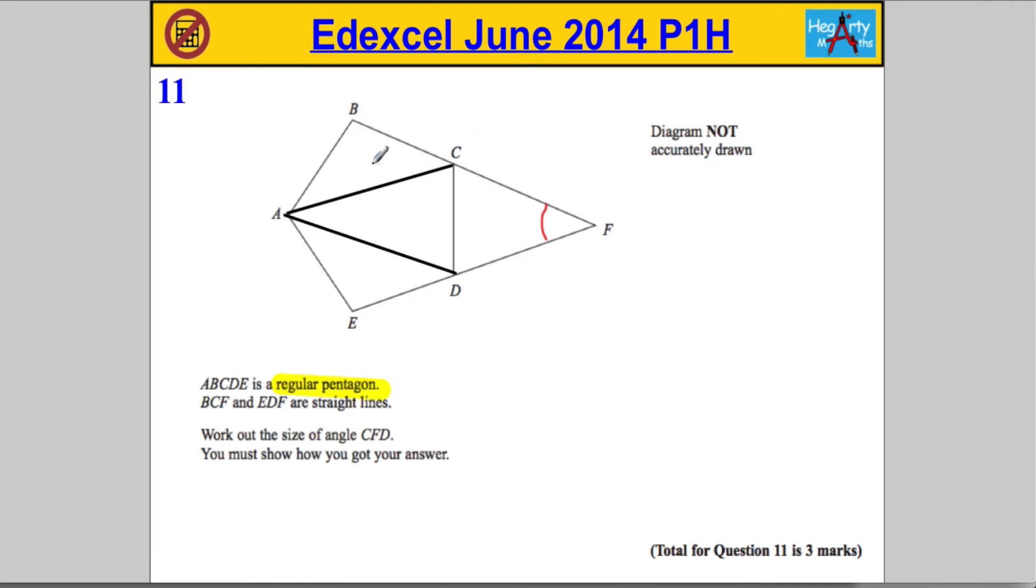So I know this pentagon has one, two, three complete triangles in it, meaning it's got three lots of 180 degrees, which is going to work out to 540 degrees in the shape in total.